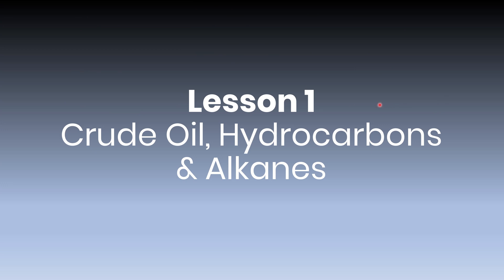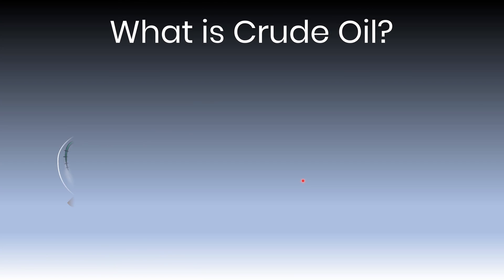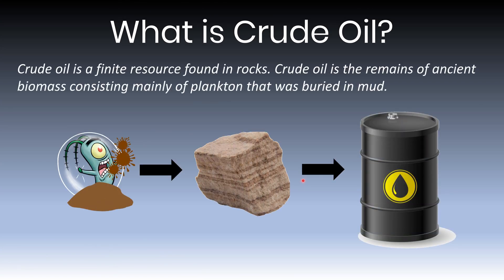In lesson one we're going to explore crude oil, hydrocarbons and alkanes. To begin with, let's get an idea of what crude oil is. It's a finite resource, which means it'll eventually run out, and it's found inside rocks. It's the remains of ancient biomass — that means the matter or the bodies of living things — which consisted mainly of plankton that became buried in mud. Over millions of years the biomass of the ancient marine organisms becomes trapped inside these rocks and slowly changes into the substance which is crude oil.